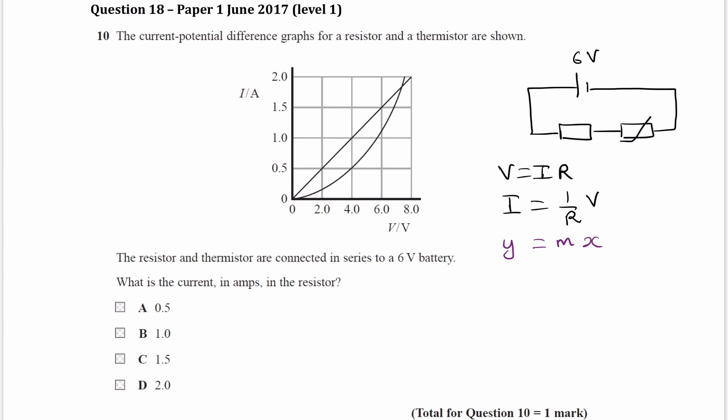The other one must therefore be the thermistor. So then we can think about the different rules for how voltage and current split or don't split in a series circuit.